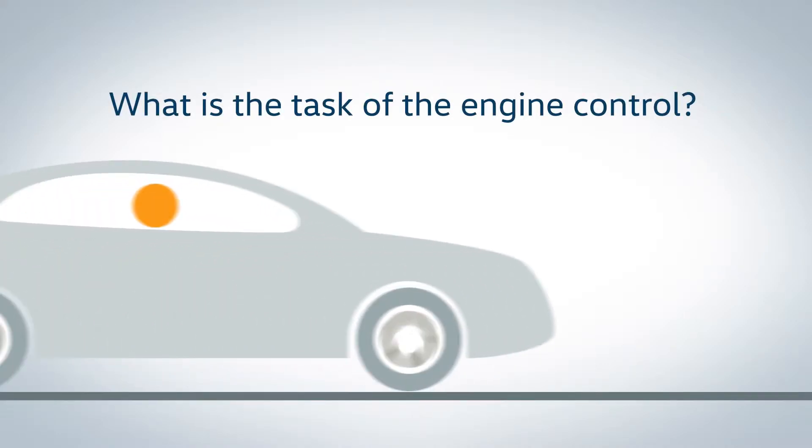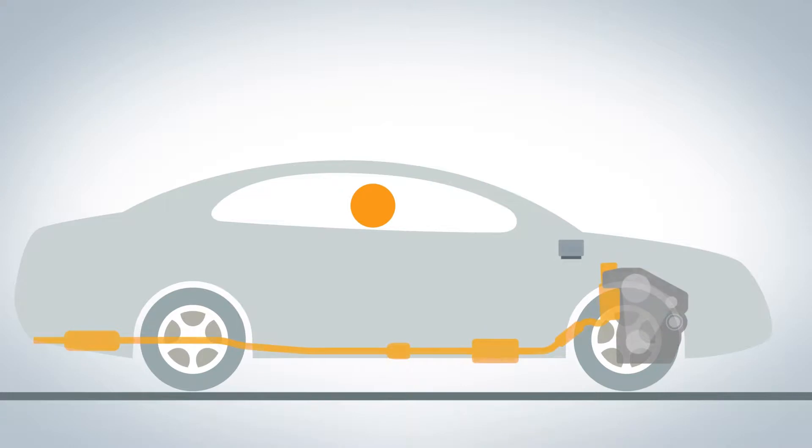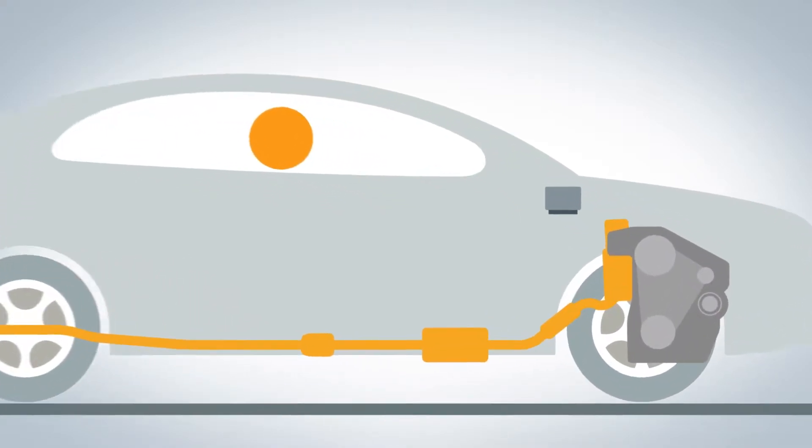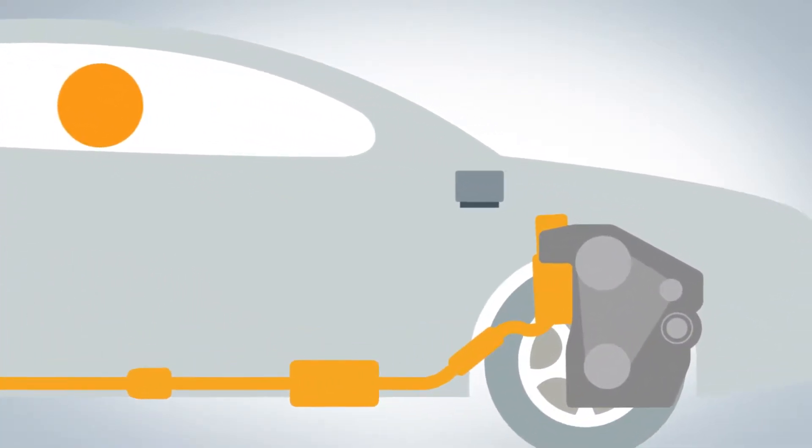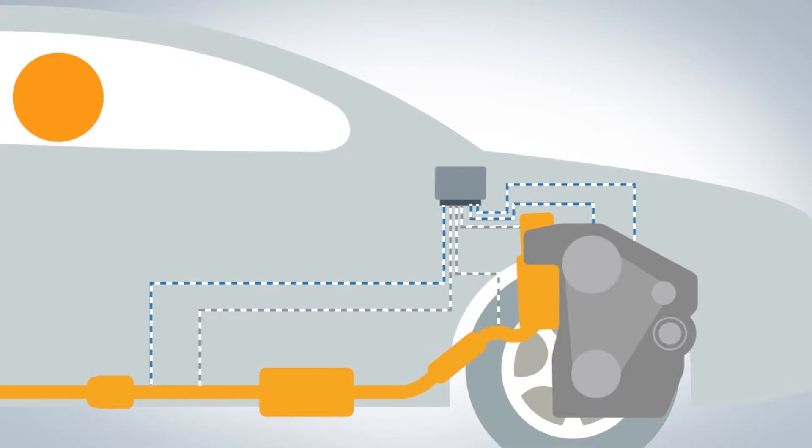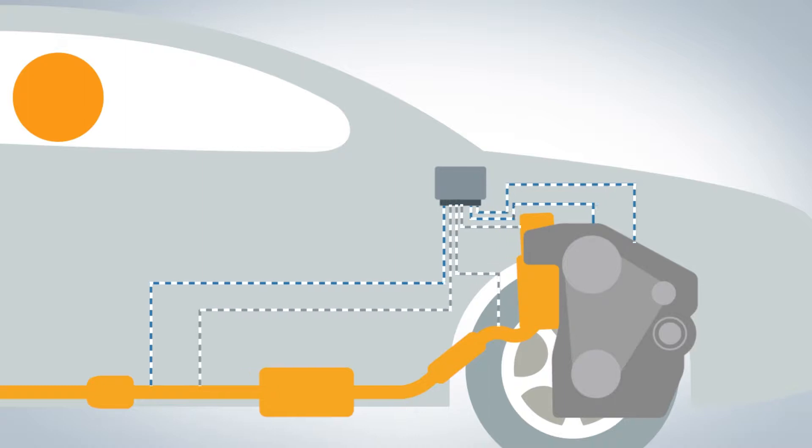An important part of a modern engine is the engine control. Its complex software processes the signals of many sensors in the vehicle and ensures that the cars offer good performance profiles with the lowest possible consumption and comply with the required exhaust standards at the same time.